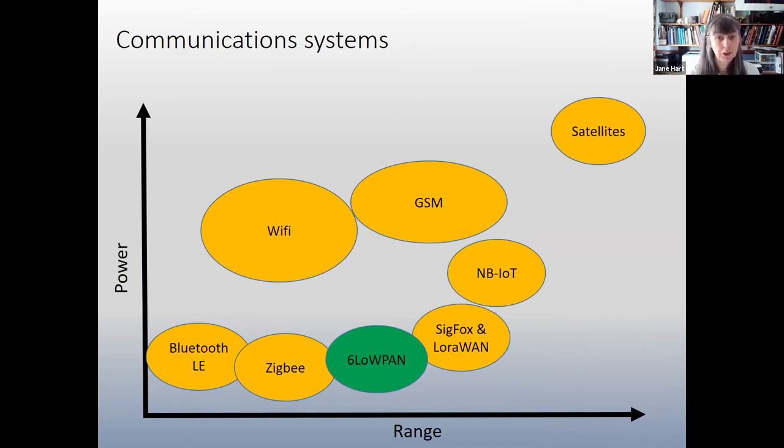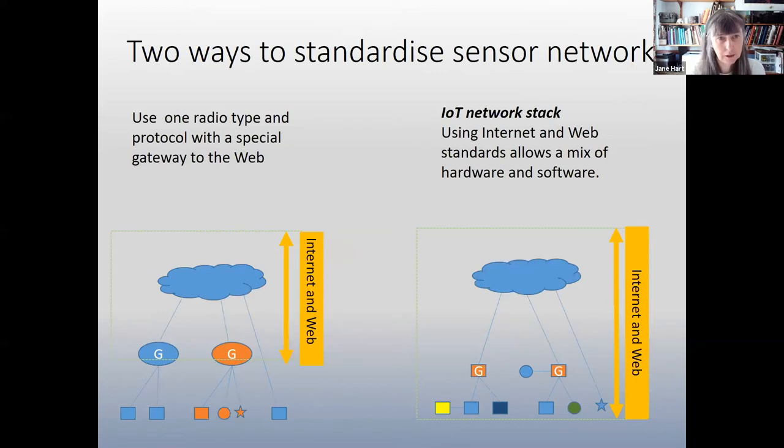So this is a little diagram showing communication systems that are available at the moment. Obviously, they keep changing all the time, but this graph shows sort of power against range. And when you're designing an environmental sensor network, you kind of need to know what range and power you have available. And each one will be subtly different and have its own sort of positives and negatives. And I think there's kind of two ways to standardize sensor networks at the moment. You either have a system like this where sort of only this part of it is in the Internet, or you go for this IoT stack where the whole thing has web and Internet standards. So you can have a mix of software and hardware. We think this is the way to go. And this is the system we used in Scotland. But there are places where you can only use this system.